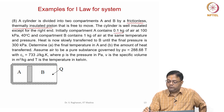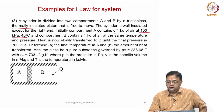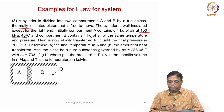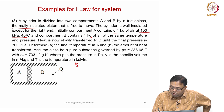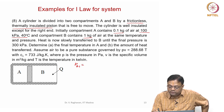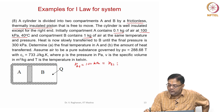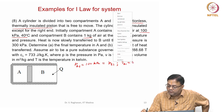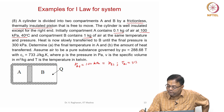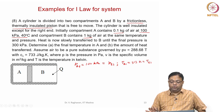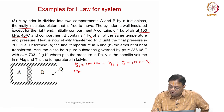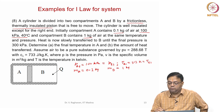Initially compartment A contains 0.1 kg of air at 100 kilopascals and 40 degrees Celsius. Compartment B contains 1 kg of air at the same temperature and pressure initially. So Pa1 = Pb1 = 100 kPa, Ta1 = Tb1 = 313 Kelvin. Mass of A is 0.1 kg, mass of B is 1 kg.